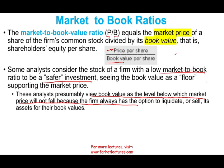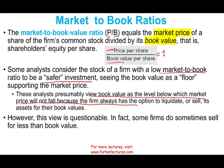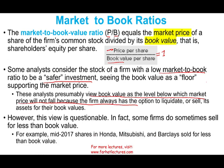The way we should look at this ratio — some analysts say the closer the P/B ratio is to one, the safer the company, because you can liquidate everything and get your money back. But this is not why you invest. You invest for future growth. This idea is very questionable. And this was proven true in mid-2017 when shares of Honda, Mitsubishi, and Barclay sold for less than their book value — so the book value is not really a floor for the stock.